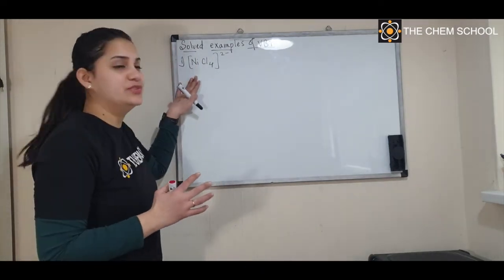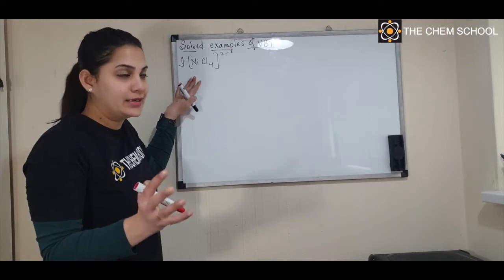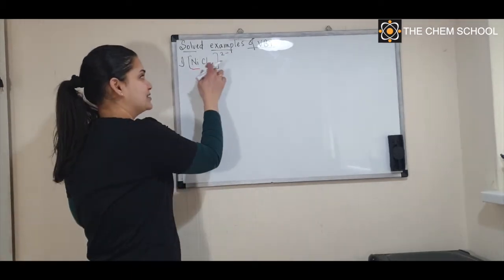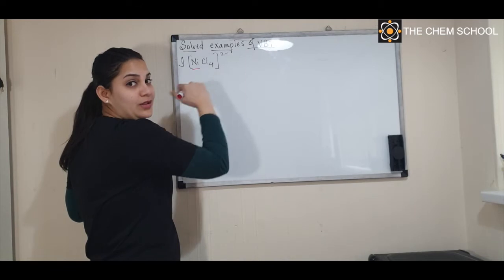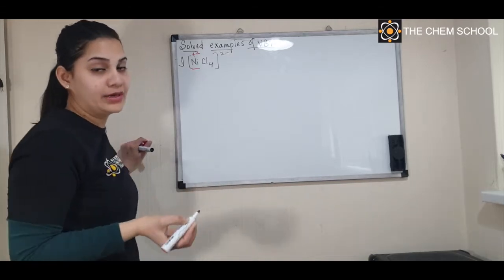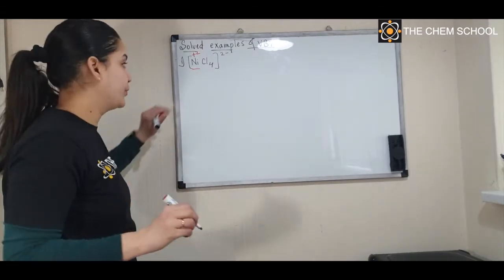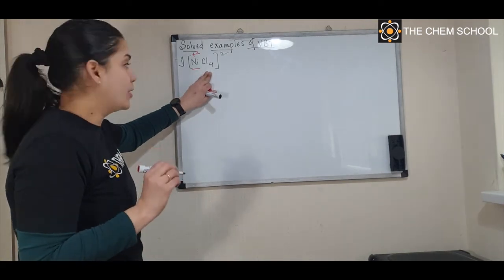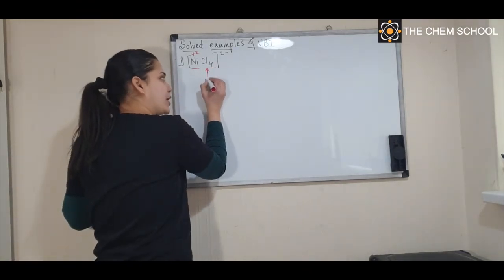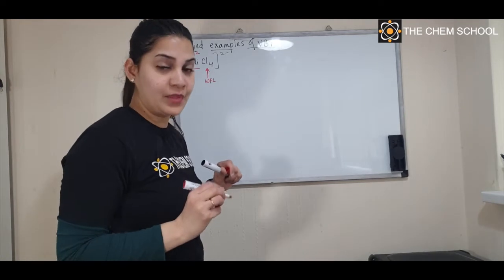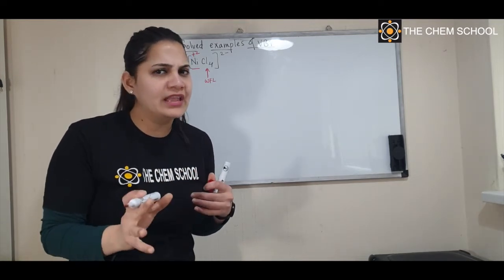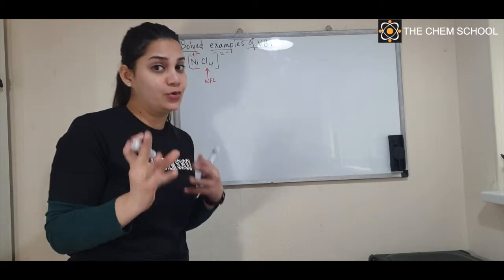We have used this complex before, so we know most of the data about it. The oxidation state of the metal: we have minus 4 and minus 2 on the other side, so nickel will have a charge of plus 2. You know how to calculate it from the CFT class. Now, for Cl, you should know whether it is a strong field ligand or weak field ligand. It is a weak field ligand from the spectrochemical series. Strong field ligands cause spin pairing, but weak field ligands do not.